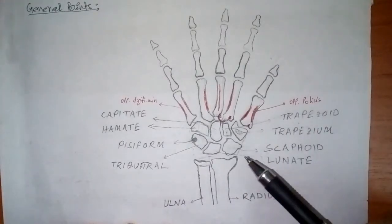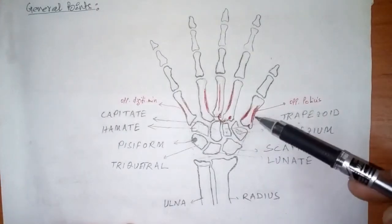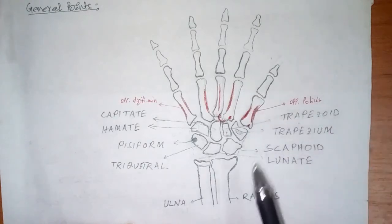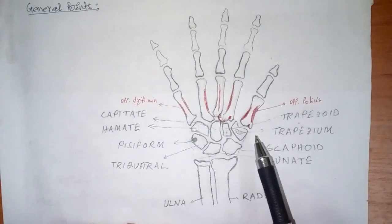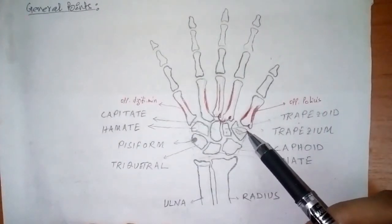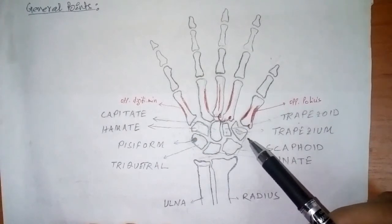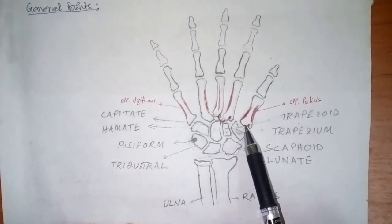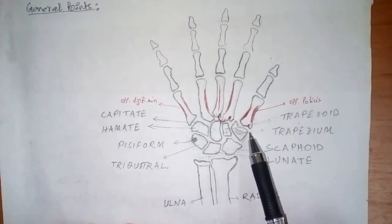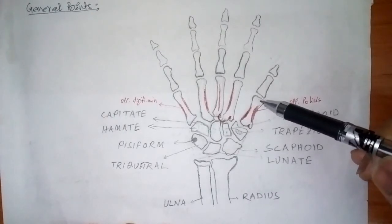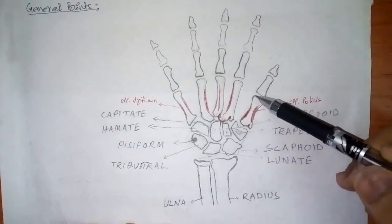That's all about the important common features of the five metacarpal bones. Now coming to each individual bone and their distinct characteristics. For the first metacarpal bone, it is the shortest and the thickest of all the metacarpal bones. The base has a convexo-concave articular surface — half of the base is convex and half is concave. That is why it is called a convexo-concave articular surface. The head is less convex and broader than the base.